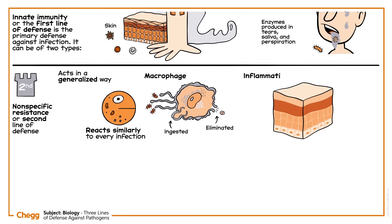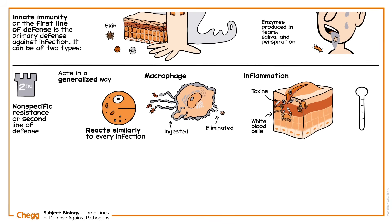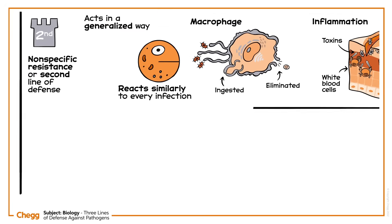Inflammation occurs when tissues are damaged due to the toxins produced by pathogens, as it triggers the migration of white blood cells to the location where the microbes have invaded. Fever is another combative action by the body that inhibits the growth of pathogens.